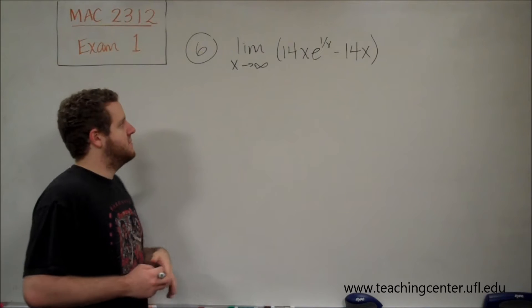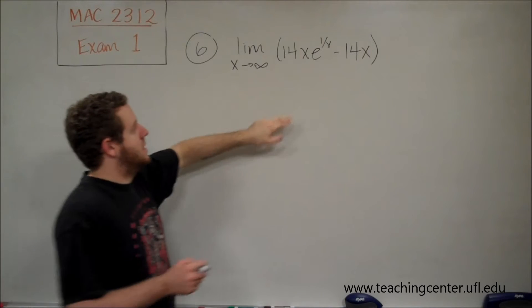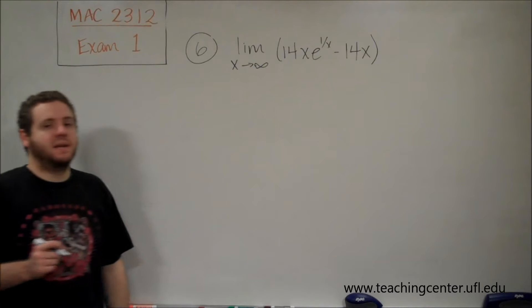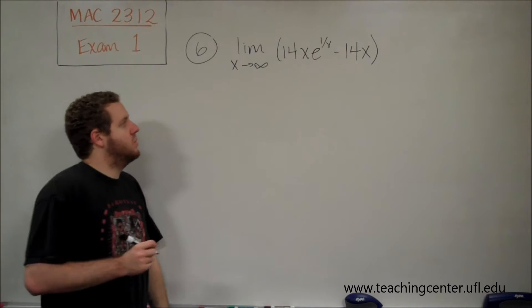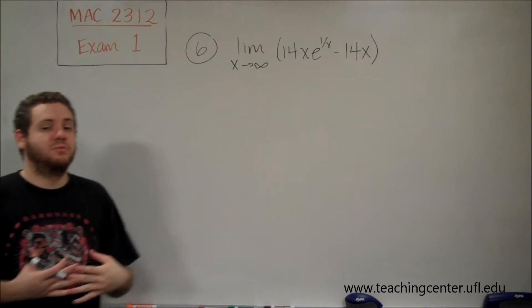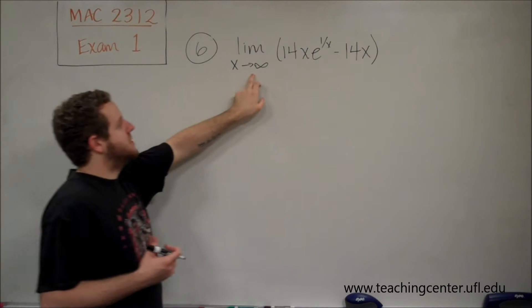For number 6, we need to evaluate the following limit: the limit as x goes to infinity of 14x·e^(1/x) - 14x. Whenever you have a limit like this, you always want to try direct substitution. What happens if we just say x is approaching infinity?